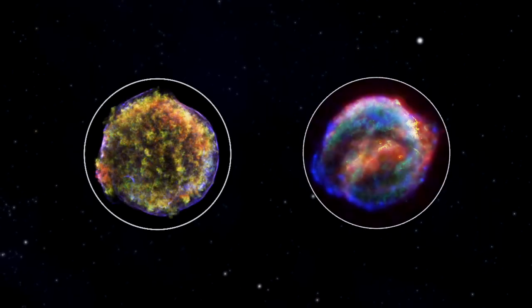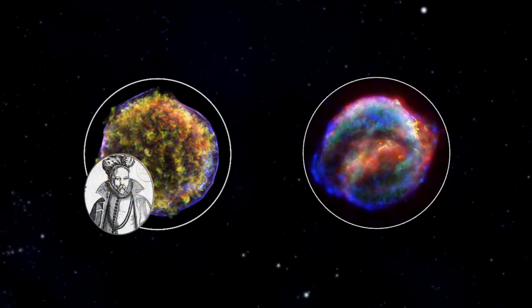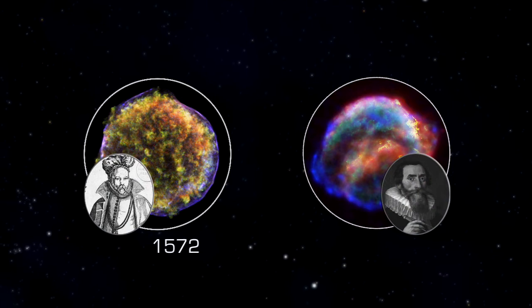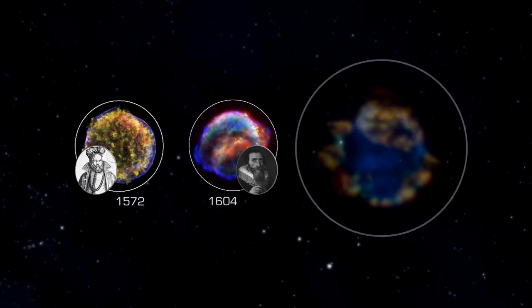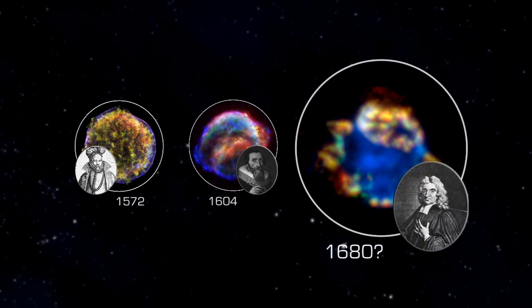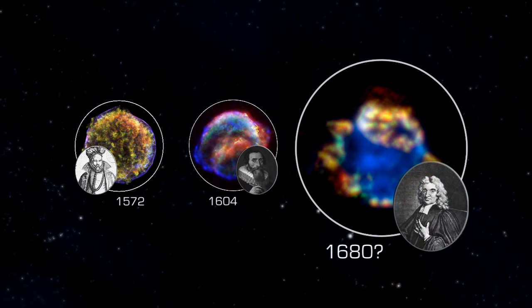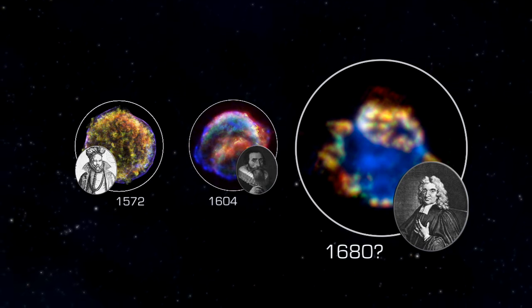A Type IIb is fainter than the earlier Type Ib supernovas noted by Tycho Brahe in 1572 and Johannes Kepler in 1604. Interestingly, the royal astronomer Flamsteed noted a star near Cass A in August of 1680, with a brightness consistent with a Type IIb supernova at that distance. So, maybe it was seen after all.